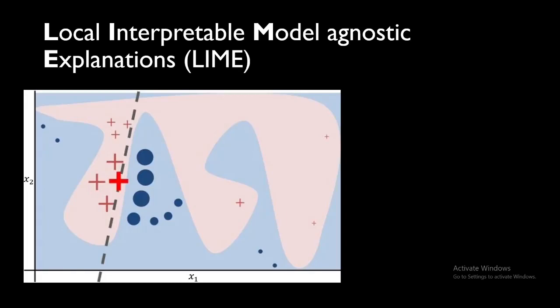LIME stands for Local Interpretable Model-Agnostic Explanation. The entire definition of this method can be seen from its name. 'Local' means it gives explanation for individual predictions, not for the entire dataset. 'Interpretable' means it generates an interpretable model from the black box model.